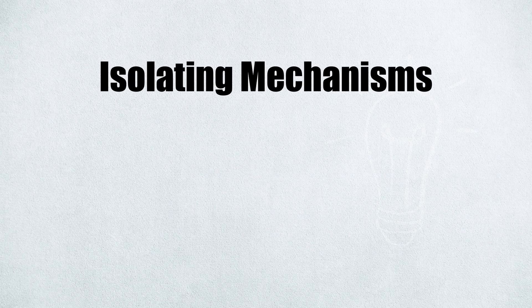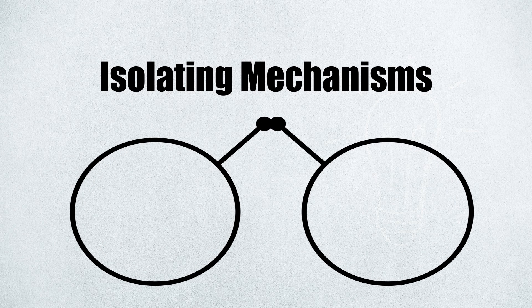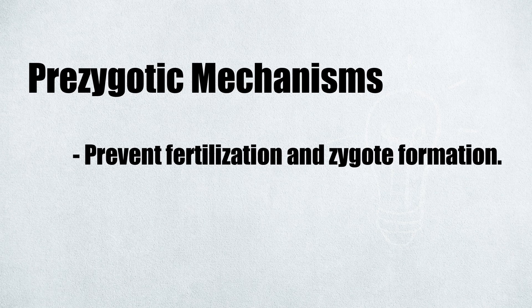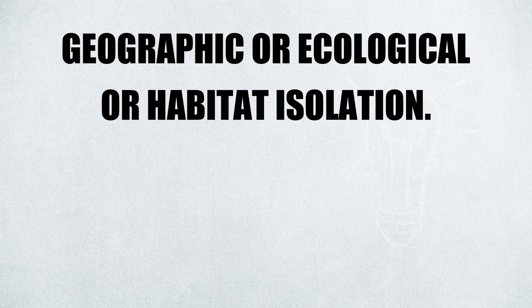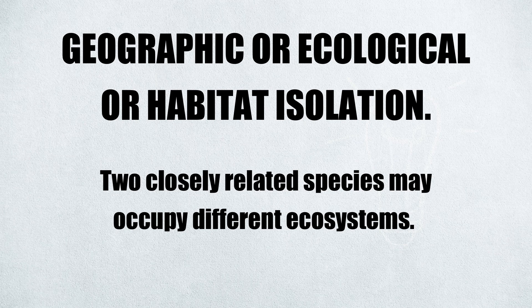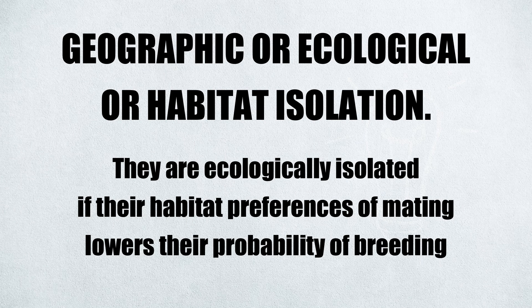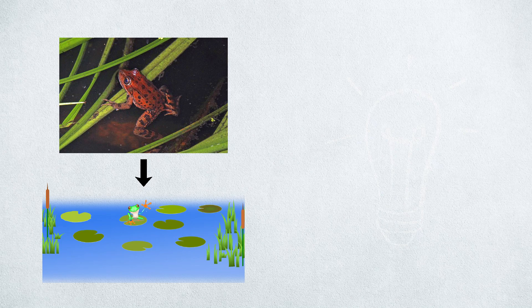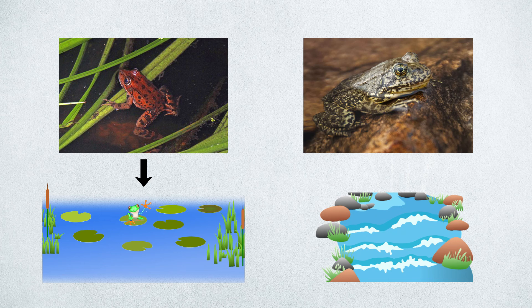Isolating mechanisms can operate at two basic levels: prezygotic and postzygotic. Prezygotic mechanisms prevent fertilization and zygote formation. One is geographic, or ecological, or habitat isolation. This occurs when two closely related species may occupy different ecosystems — they are ecologically isolated if their habitat preferences lower their probability of breeding. A great example is the red-legged frog that tends to breed in large ponds, while the yellow-legged frog breeds almost exclusively in fast-moving streams.